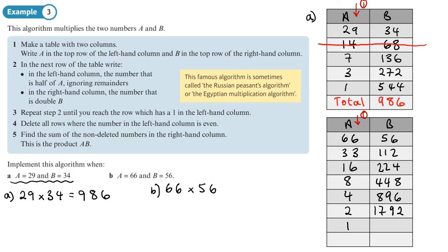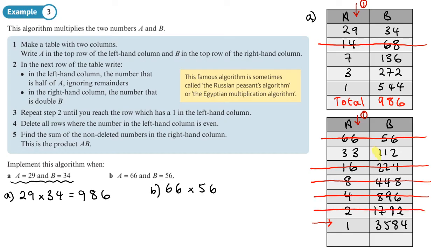Continuing: 4 halves to 2, 896 doubles to 1792. Then 2 halves to 1, 1792 doubles to 3584. We've reached one in the left column, so we stop. Now we cross out all rows where the left column is even — that's quite a few — leaving only the odd-left-column rows.